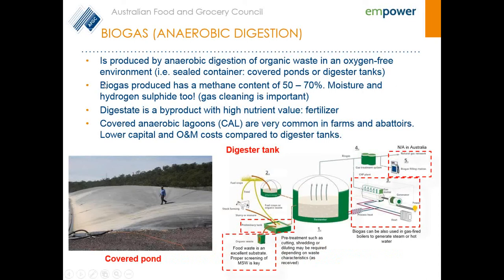Anaerobic digestion is the process where biogas can be generated from organic waste in an oxygen-free environment, which means you have to have a sealed container or a covered pond. The biogas produced normally has a methane content of around 50 to 70 percent depending on the process parameters and the composition of the waste. The remaining gas is mostly CO2, but moisture and sulfur content also need to be accounted for, as they can create a risk of corrosion. So cleaning of the gas is an important aspect.